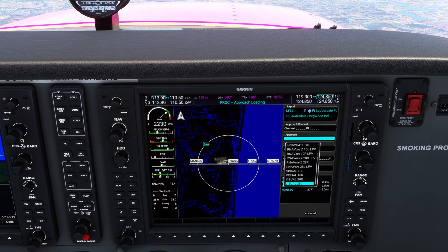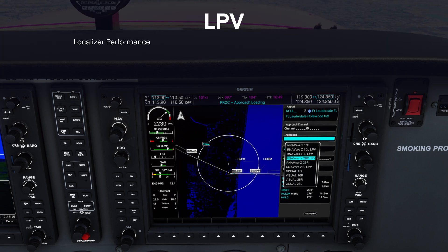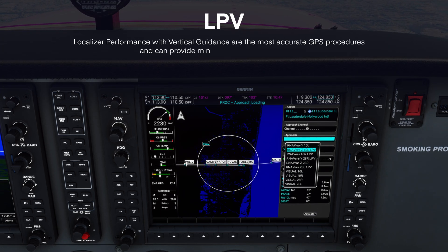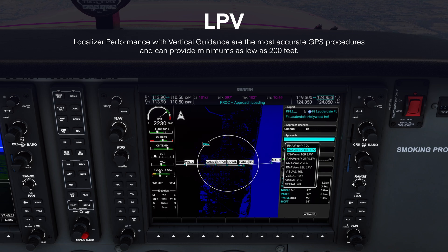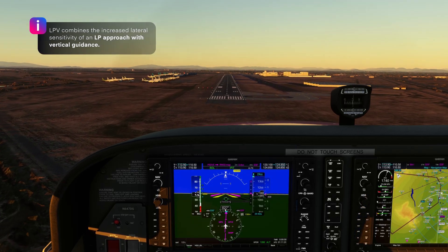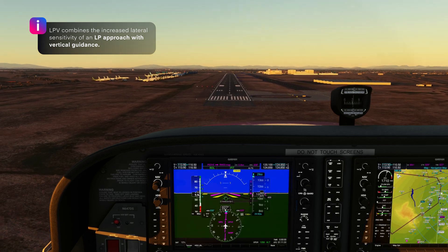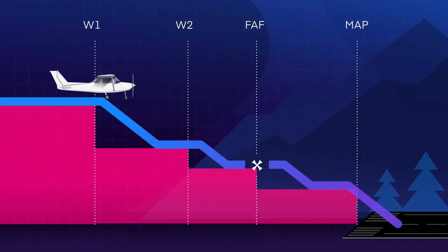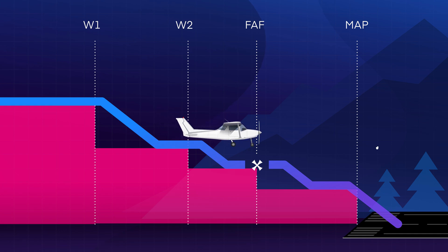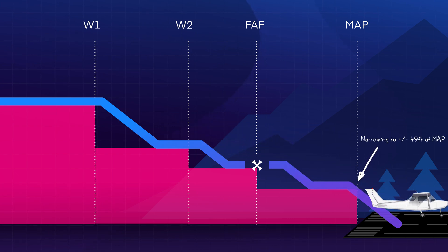And finally, we have Localizer Performance with Vertical Guidance or LPV approaches. These are the most accurate GPS procedures and can provide minimums as low as 200 feet. LPV combines the increased lateral sensitivity of an LP approach with vertical guidance. The vertical path scales like an ILS, narrowing to plus or minus 49 feet at the missed approach point. We'll need WAAS to fly one.